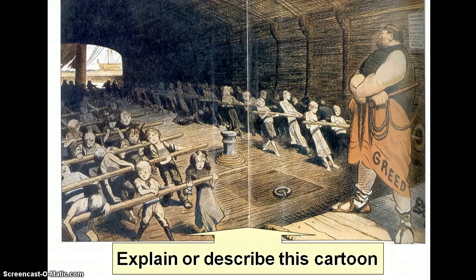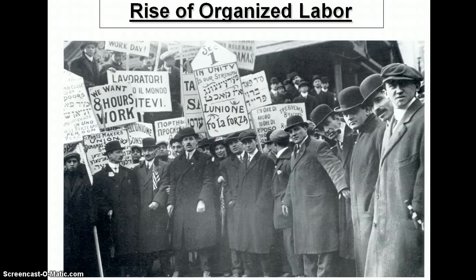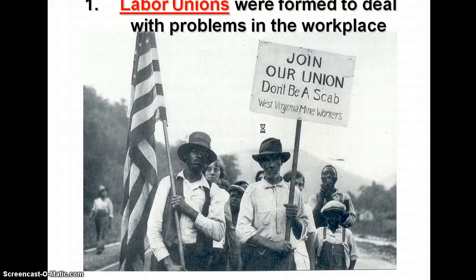Take a look at this cartoon — what is going on? You do have a miraculous thing on your computer called the pause button, so if I move too fast, you can always pause and answer as we go. The rise of organized labor happens in the late 1800s and early 1900s and features people of all different languages and nationalities. You can see the translation: 'We want eight hours of work' — in different languages as well. Labor unions are formed to deal with problems in the workplace: both working conditions and low wages.